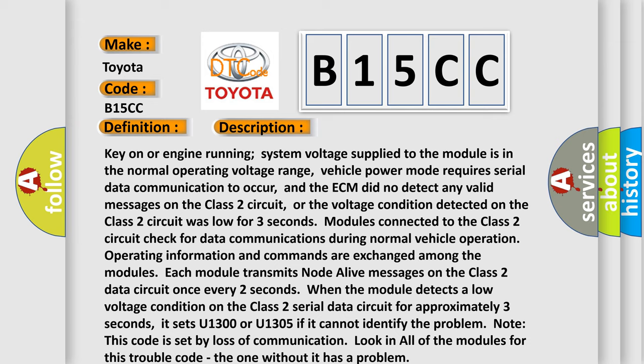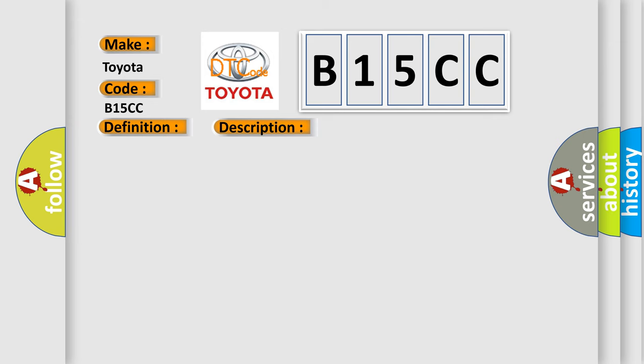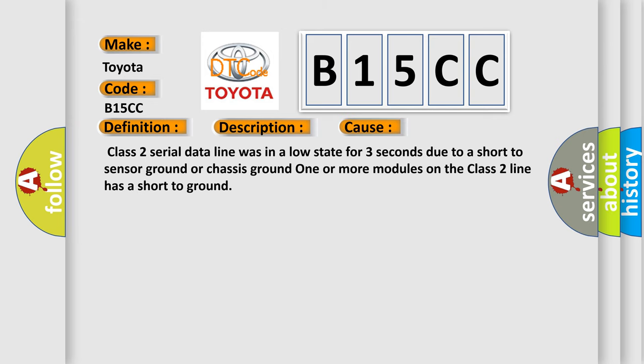This diagnostic error occurs most often in these cases: Class 2 serial data line was in a low state for three seconds due to a short to sensor ground or chassis ground. One or more modules on the Class 2 line has a short to ground.